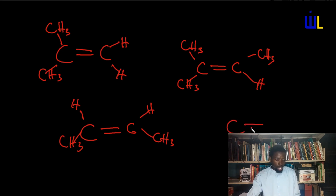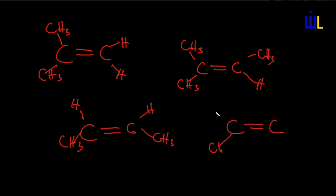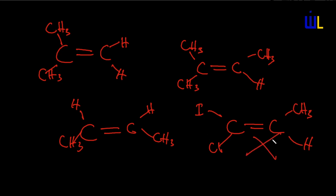If you had a C double bond C with Cl on one side, iodine on another, CH3 on one carbon, and hydrogen on the other — these substituents are all different, and there is no similar species between the carbon atoms. Because there is no similar species between the carbon atoms, this compound does not exhibit geometric isomerism.